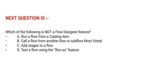Next question: Which of the following is not a Flow Designer feature? Option A: Run a flow from a catalog item. Option B: Call a flow from another flow or sub-flow. Option C: Add stages to a flow. Option D: Test a flow using the Run As feature.